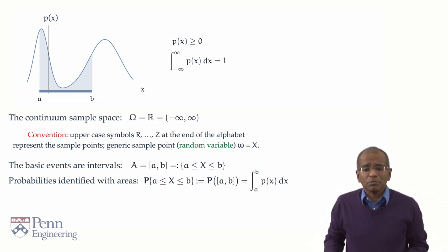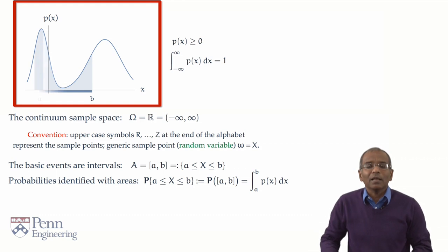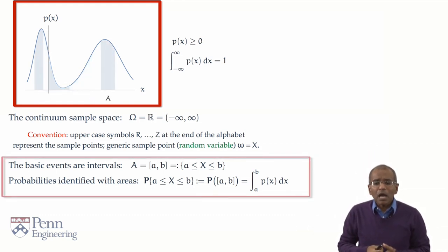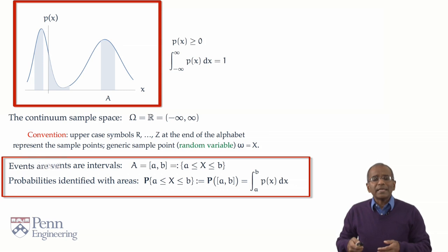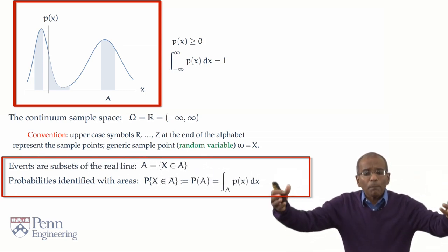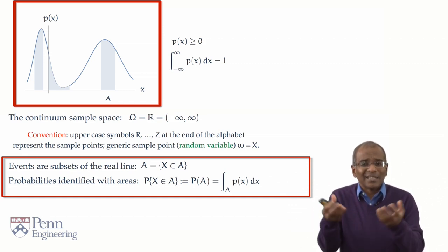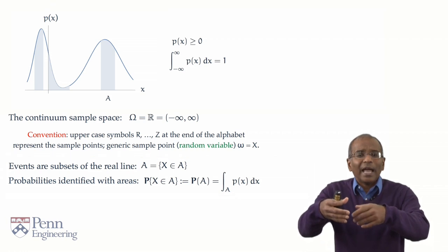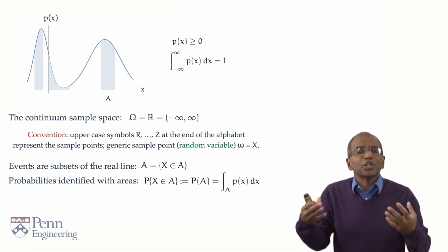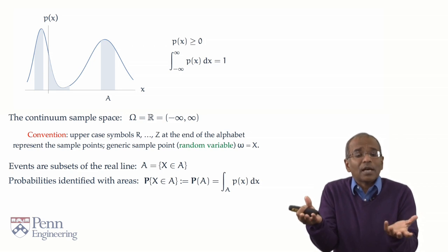What about more general events? Well, a more general event is obtained by taking various subsets of various intervals on the line and stitching them together like this. So now we're going to have basic events, which engender more complex events by a process of unions, intersections, set differences, and so forth. Let's say A is one such generic event. I've shown it to you by three shaded areas under the curve.